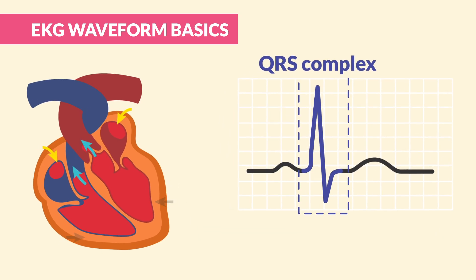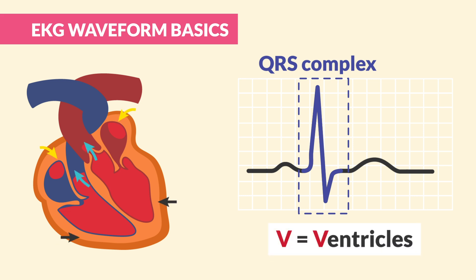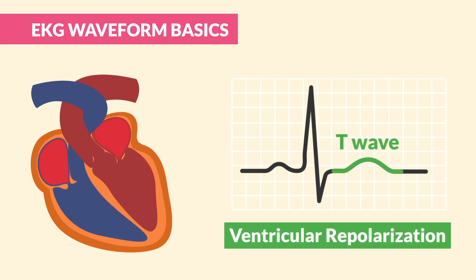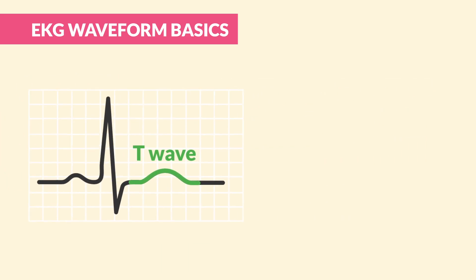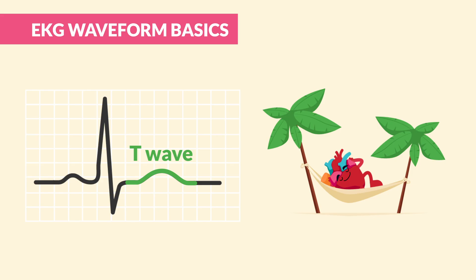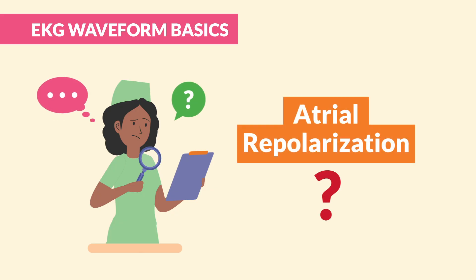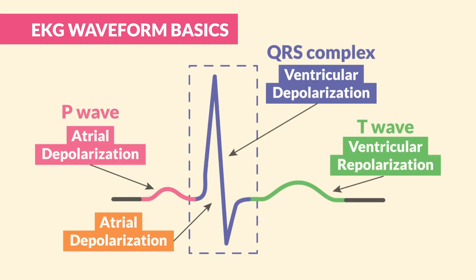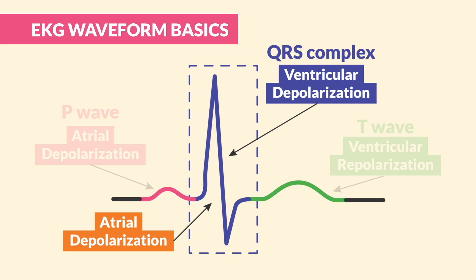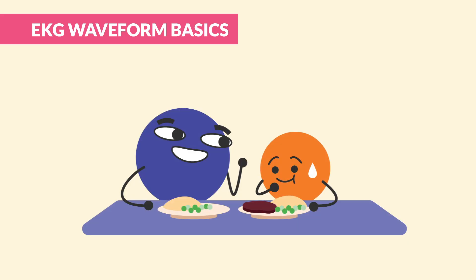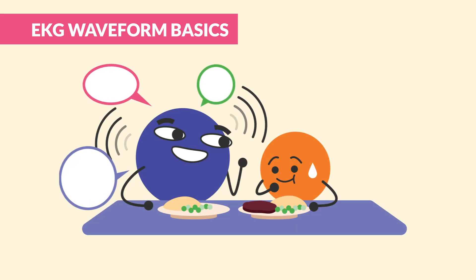Here's a fun fact: the QRS kind of looks like a big old V for ventricles. Finally is the T wave — because whatever goes up must come down. This is the ventricles repolarizing, basically relaxing and refilling with blood, so they're ready to fire again. Someone always asks, where's the atrial repolarization? That's a great question — it's actually hidden behind the QRS complex, because the ventricles are simply louder and bigger electrically. Kind of like when you have that one extroverted friend who talks over you at brunch.